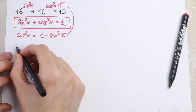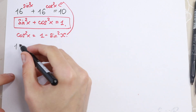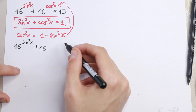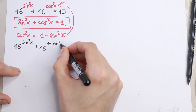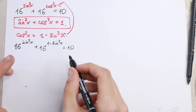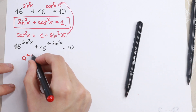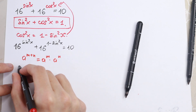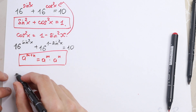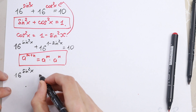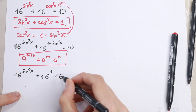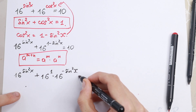After substituting, we have 16 to the power sine squared x, plus 16 to the power (1 minus sine squared x), equal to 10. We need the exponent rule: a to the power (m plus n) equals a to the power m times a to the power n. Applying this rule, we split the second term: 16 to the power 1 times 16 to the power (minus sine squared x), equal to 10.